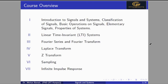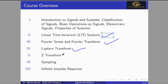Now we start the Signals and Systems course. In this course we will cover the entire subject of signals and systems. We start from signals and systems, then discuss classification of signals, basic operations on signals, elementary signals, and then systems. After that we will discuss linear time-invariant (LTI) systems. Then Fourier series and Fourier transform, which are continuous time in nature. Laplace transform is used to overcome the limitations of the continuous time Fourier transform. After that, the Z-transform, which overcomes the limitations of the discrete time Fourier transform. Then we will talk about sampling and infinite impulse response.